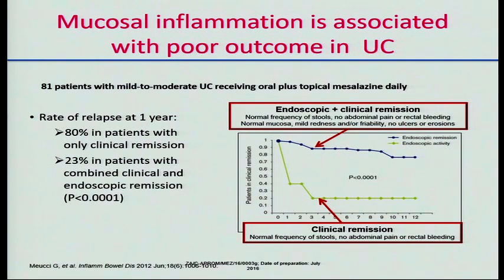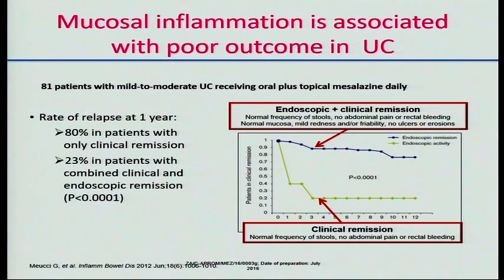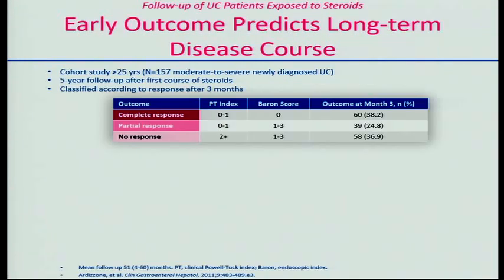We know that mucosal inflammation is associated with a poor outcome. In a group of 80 patients with mild to moderate ulcerative colitis receiving oral and topical mesalazine, patients who felt well and whose mucosa was also well had only a small proportion relapse over the following year. But those who felt well despite having active inflammation — the majority relapsed over time. This clearly shows that having active inflammation is a poor prognostic factor.